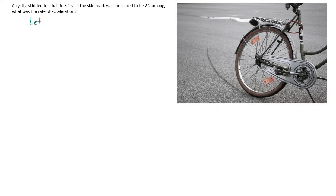Again, let's choose a direction, and I think it makes sense to have the cyclist going in the positive direction. Our question gives us information about time of 3.1 seconds. We have a distance of 2.2 meters. Of course, this is the distance during which this cyclist was decelerating, and we are asked for the rate of acceleration.